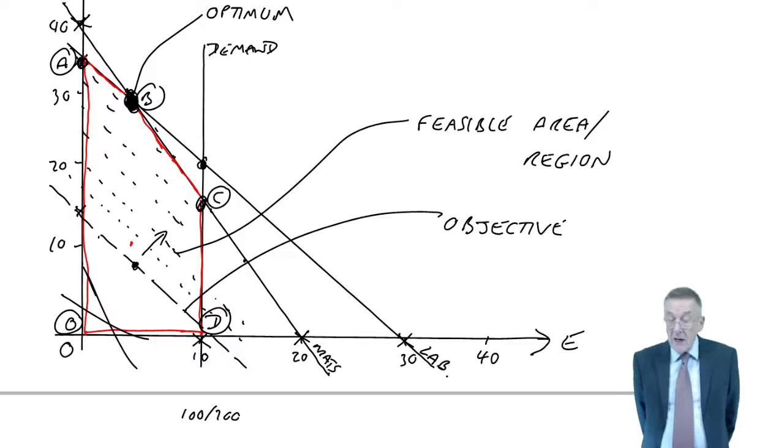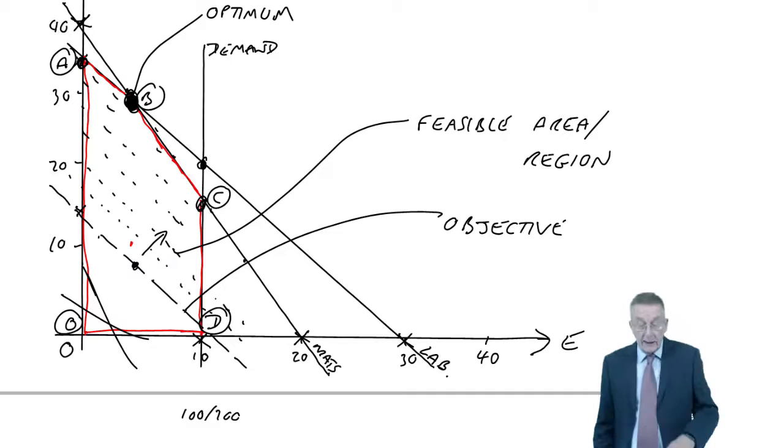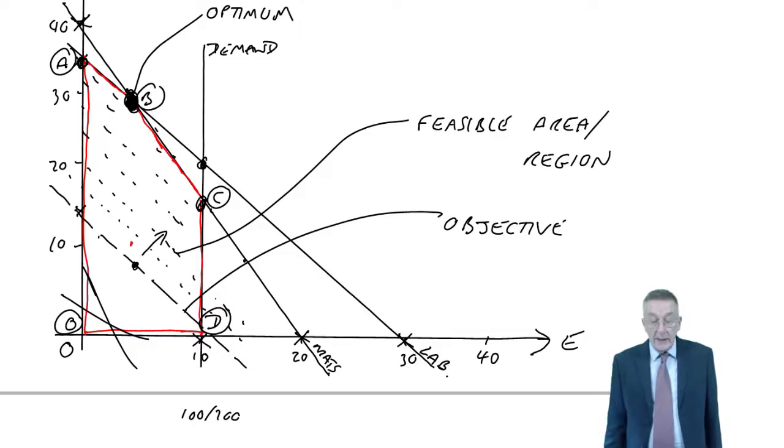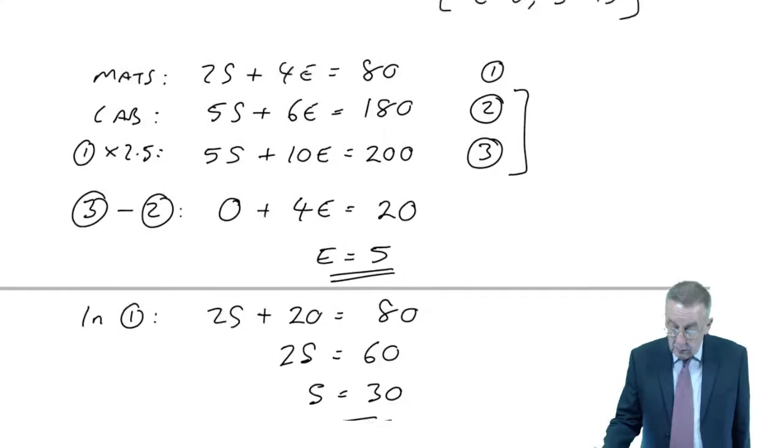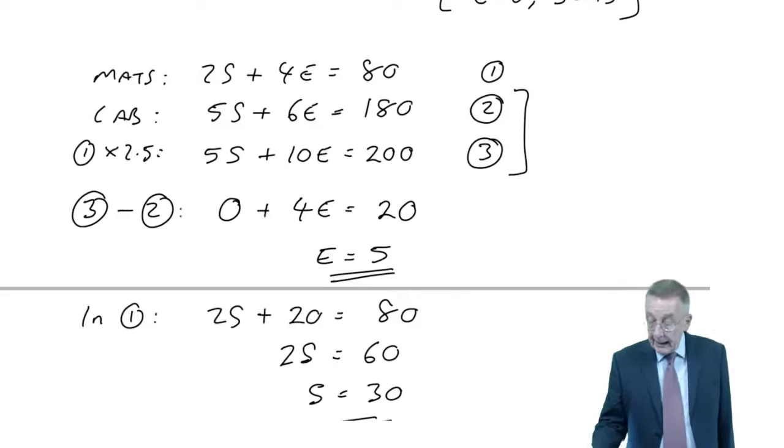We've done example one, and sorry, my graph has ended a bit messy because of what I was trying to explain. But we do know the optimum production was at point B, which was five executive chairs and 30 standard chairs, and it gave us a total contribution of 225.